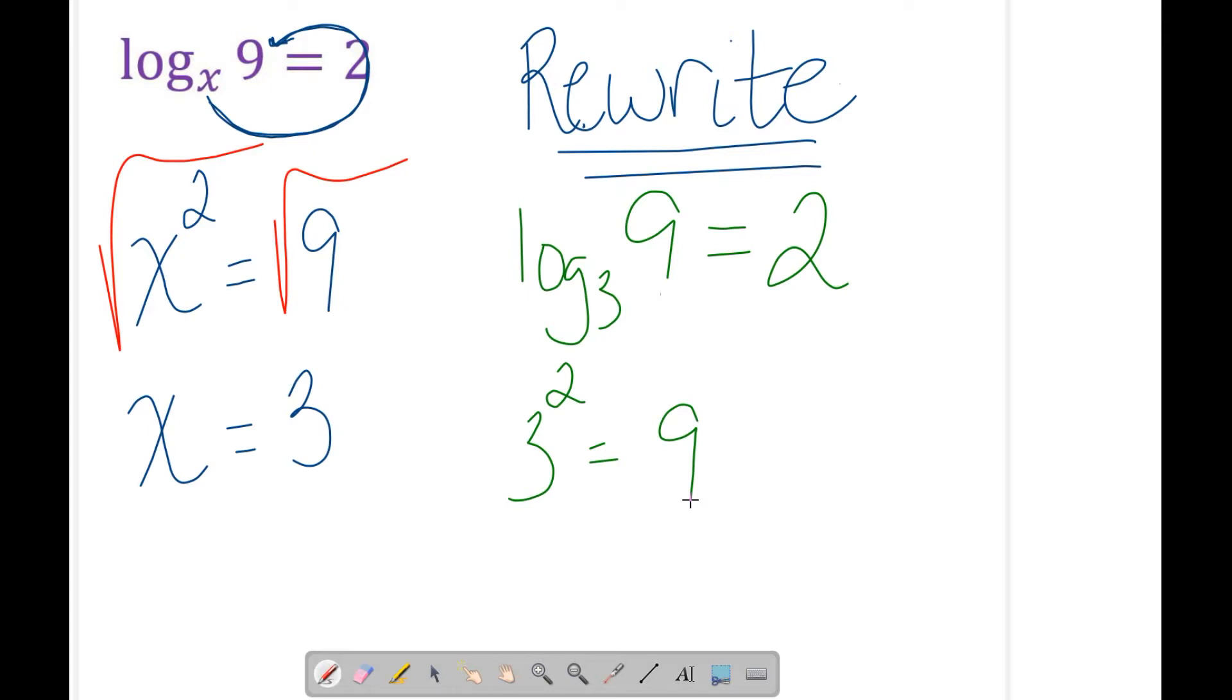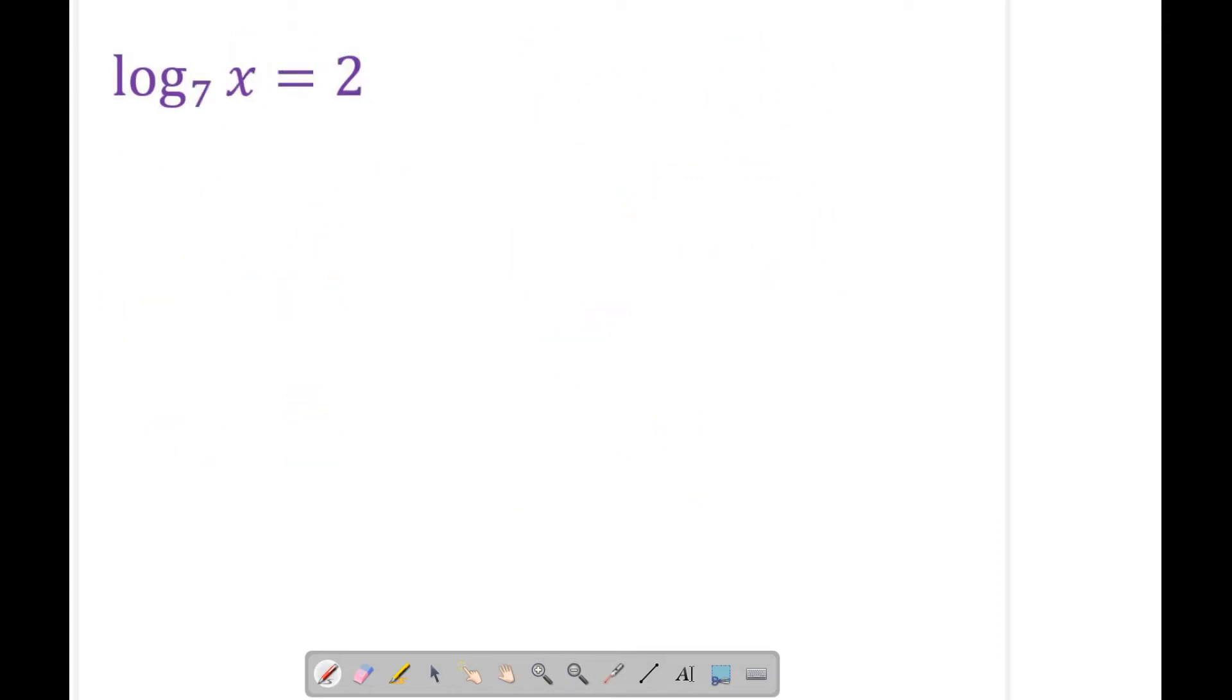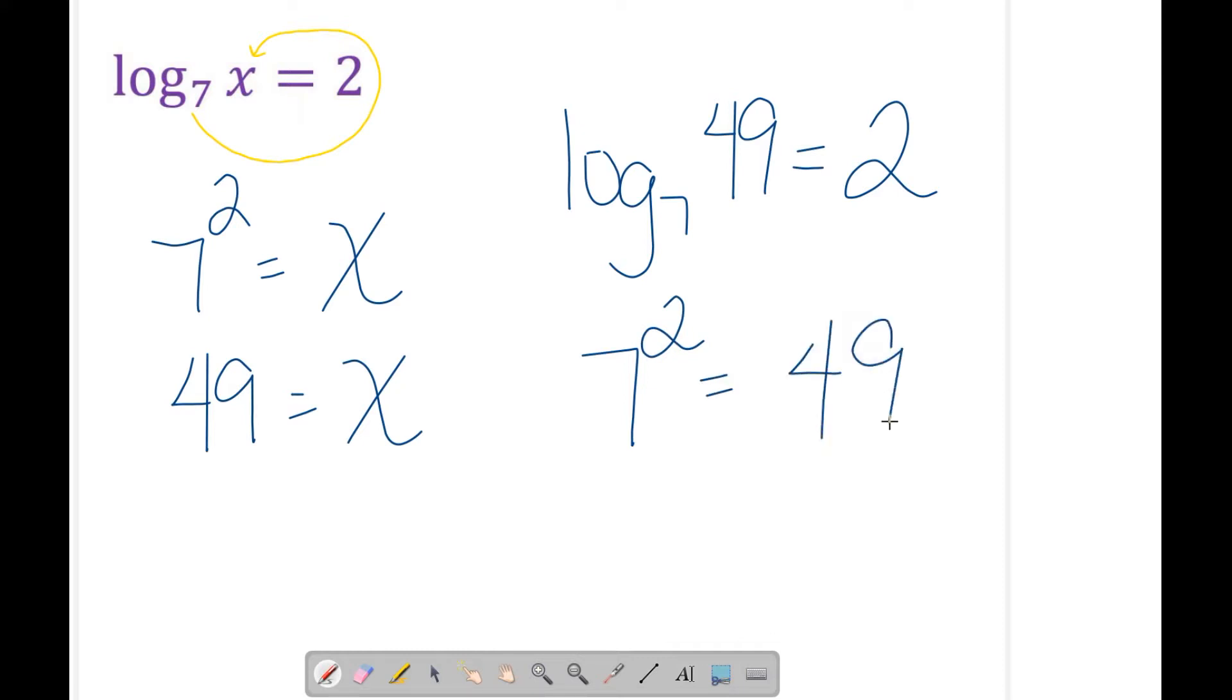Let's look at another one. This one says log base 7 of some number x equals 2. Again, we're going to start out exactly how we did last time. We're going to rewrite it. Start at the base of 7, loop-de-loop, pick up the 2 as the exponent, land at x. We got 7 squared equals x. This one is so much easier to solve. I just have to do 7 squared, which is 49. My answer is 49. So this says log base 7 of 49 equals 2, which means 7 squared equals 49.